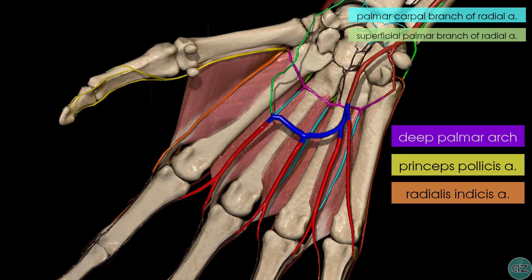So we've now seen how the superficial and deep arches are formed from branches of the radial and ulnar arteries. The superficial palmar arch is formed from the ulnar artery anastomosing with the superficial palmar branch of the radial artery. The deep palmar arch is provided mainly from the radial artery, anastomosing with the deep palmar branch of the ulnar artery.